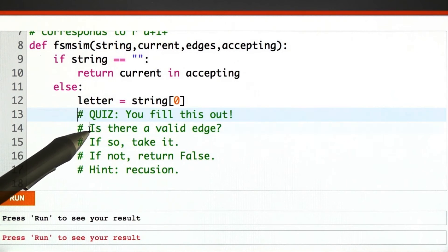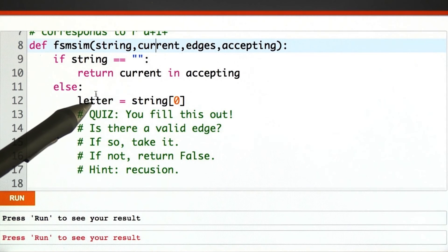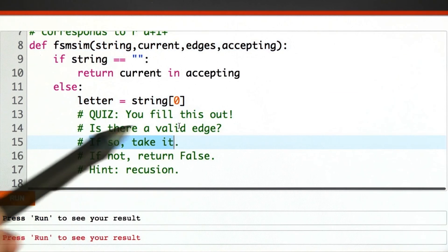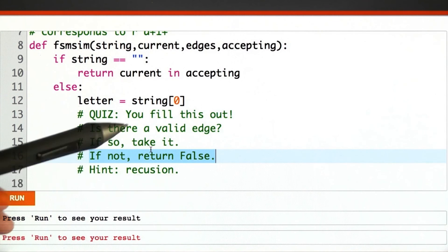Here's a hint. Find out if there's a valid edge leaving from this state on this letter. If there is, you should take that edge and keep walking. If there is not, we fall off the end of the finite state machine and die, so you should return false.